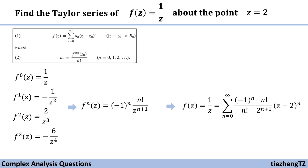So f(z) = 1/z becomes a sum from n=0 to infinity. Here a_n is the nth derivative of f(z₀), and in this case z₀ = 2. So we have (-1)^n times n factorial over 2 to the power of (n+1), divided by n factorial, times (z minus 2) to the power of n, because z₀ = 2 in this case.